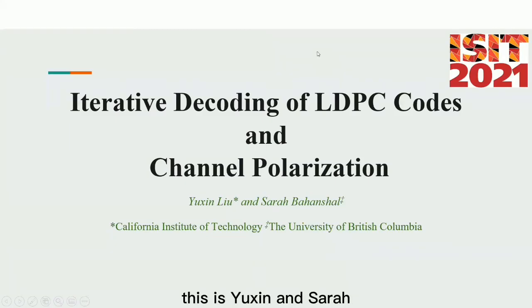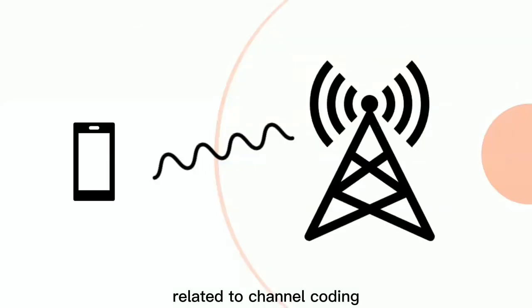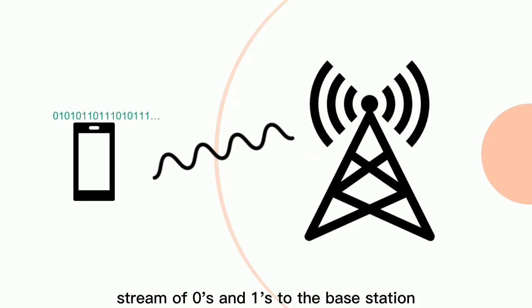Hello everyone, this is Yuxing and Sarah. Today we'll be talking about two concepts related to channel coding. As we might expect, the communication channels in real life are almost never perfect. Data packets might be corrupted or lost during transmissions. As an example, our phone transmits a stream of 0 and 1 to the base station.